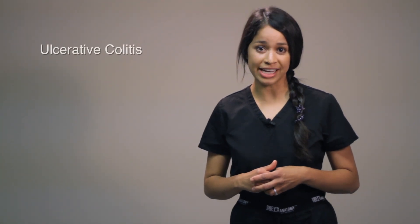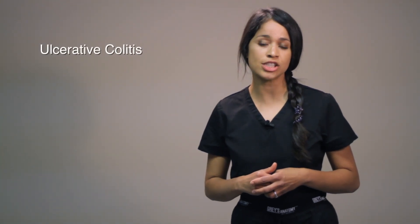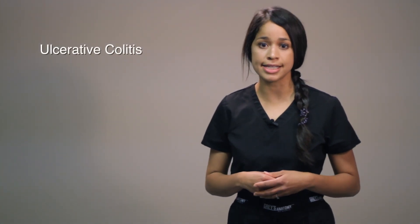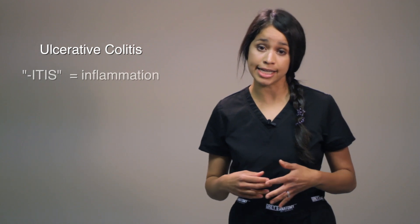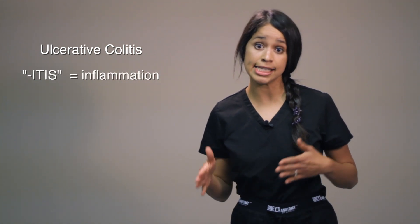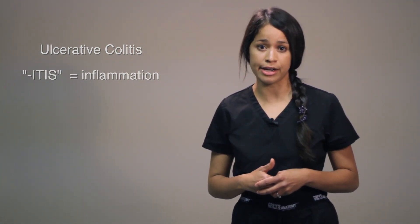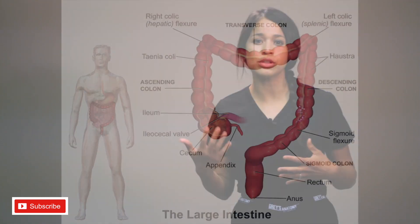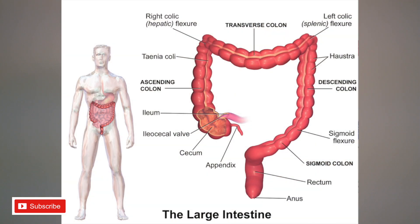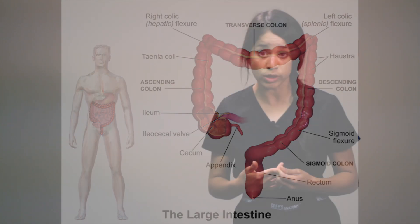Beginning with Ulcerative Colitis, this disease causes inflammation — as colitis ends in ITIS, meaning inflammation — within the mucosa layer. Here is a quick review of the large intestine, which includes the sigmoid, descending, transverse, and ascending colon.